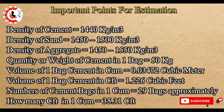Volume of one bag of cement in cubic feet equals 1.226 cubic feet. Number of cement bags in one cubic meter equals 29 bags approximately. One cubic meter equals 35.31 cubic feet.